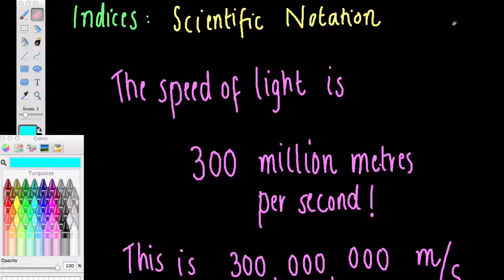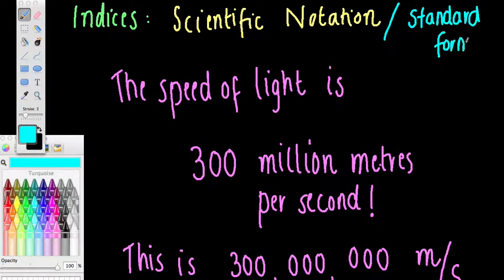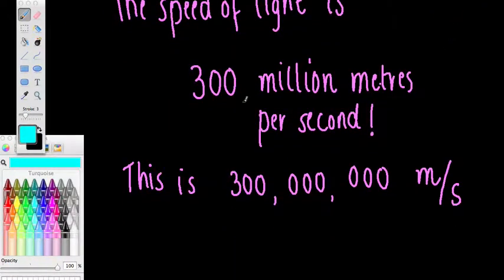There's another way to say scientific notation. You can also say standard form. So I'll try and interchange them a little bit, just as a reminder that scientific notation and standard form are the same thing. So what we're going to do is have a look at how do we actually put something into scientific notation, and we'll use this one here, 300 million metres per second, as an example.